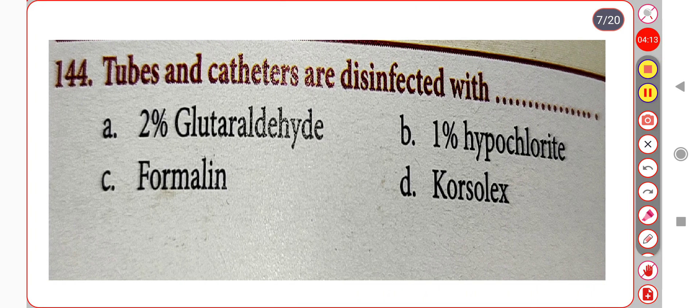Next question. Tubes and catheters are disinfected with: Option A. Two percent glutaraldehyde. Option B. One percent hypochlorite. Option C. Formalin. Option D. Cidex. Correct answer is Option A: Two percent glutaraldehyde.